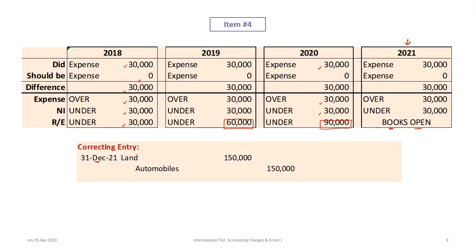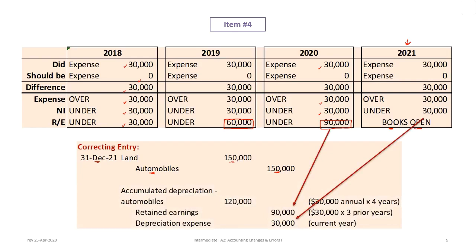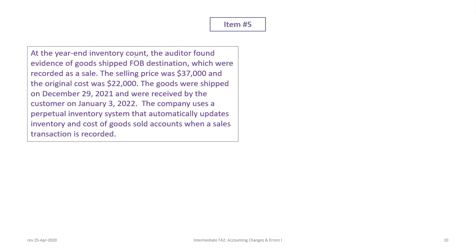The correcting entry first moves the $150,000 cost from automobiles to land: debit land $150,000, credit automobiles $150,000. Then we credit retained earnings $90,000 for three prior years ($30,000 × 3), credit depreciation expense $30,000 for the current year adjustment, and debit accumulated depreciation for automobiles $120,000 — which is $30,000 per year times four years (three prior plus one current).